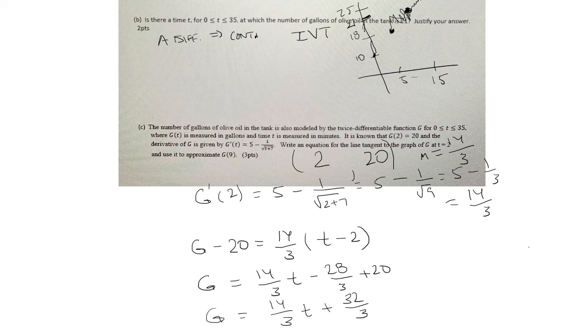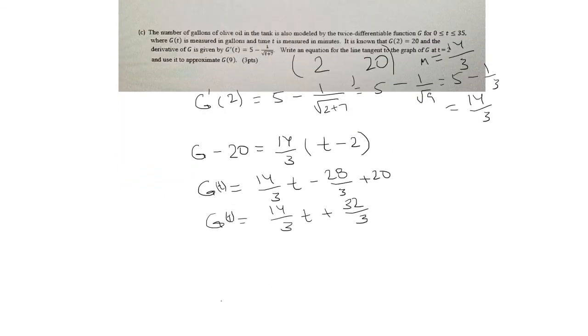Last thing I need to do is approximate g of 9. So this is g of t. So I can approximate g of 9 by plugging in t equals 9. So it's 14 over 3 times 9 plus 32 over 3.